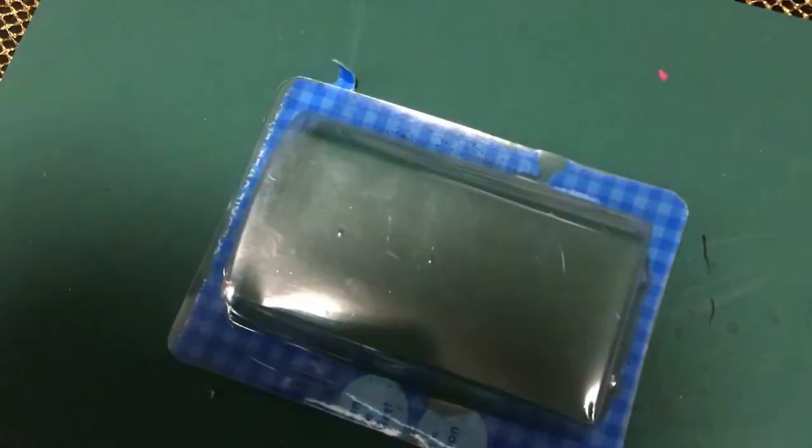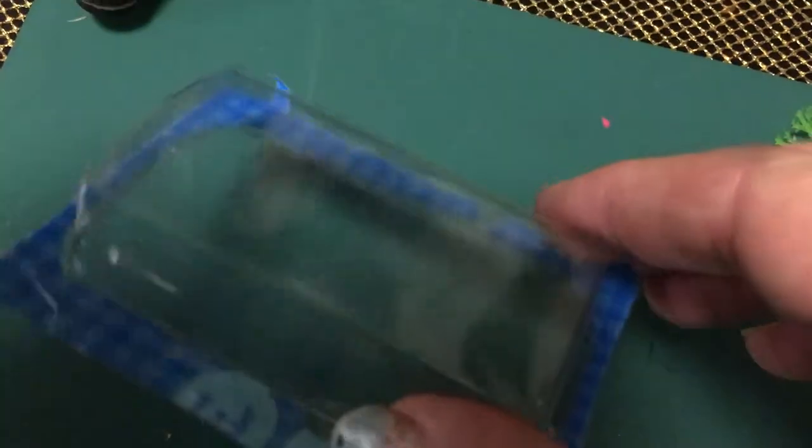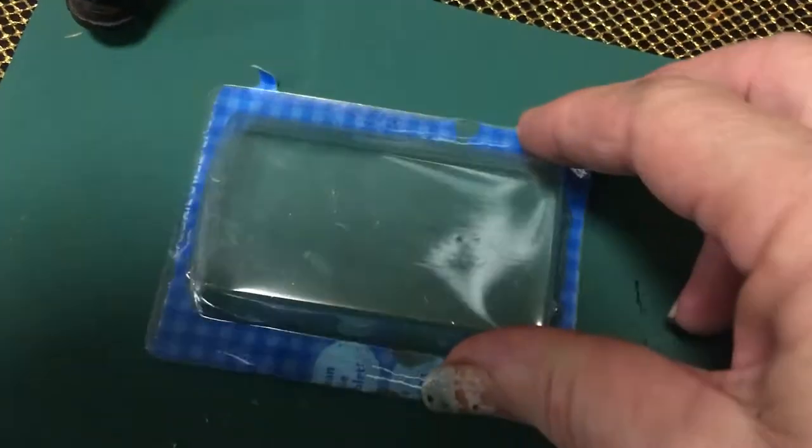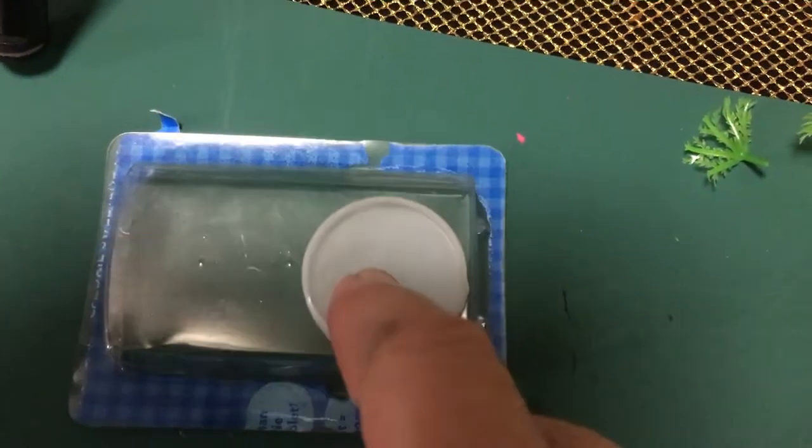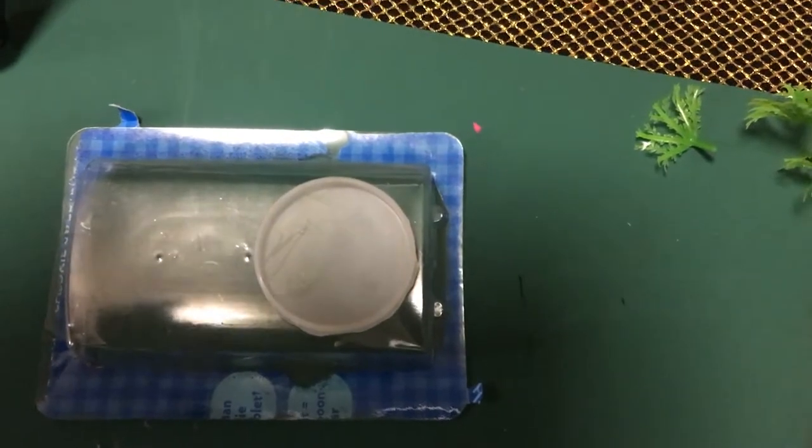And I'm going to take a piece of plastic, just from another piece of packaging, and trace around that so I can do the water on top of that with the koi fish in it.